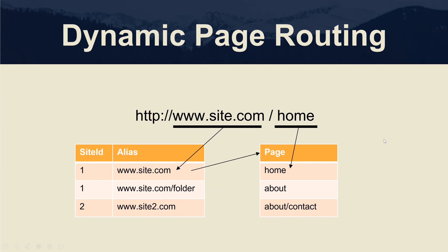That's basically how dynamic page routing works. You can have as many different sites as you want as part of an Octane installation, and for each of those sites you can have as many pages as you want as well.